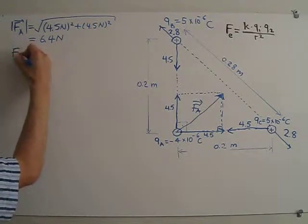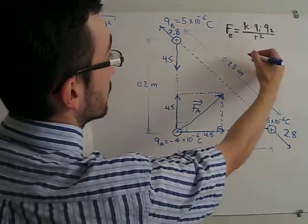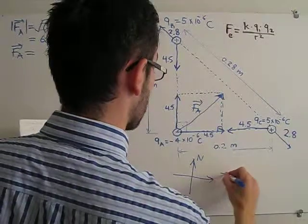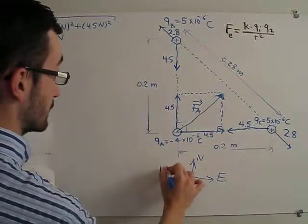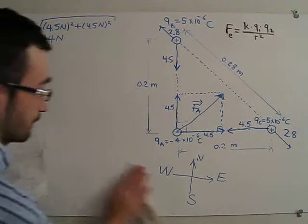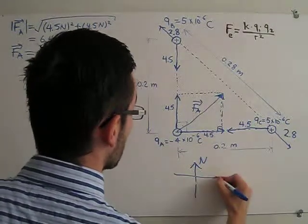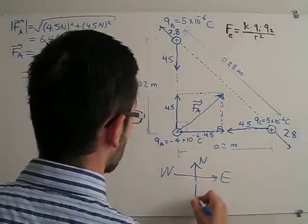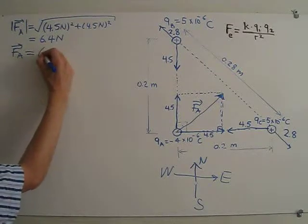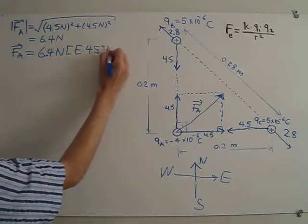Let us define north and east directions on this diagram, with west and south accordingly. Because these angles are 45 degrees, FA is given by 6.4 Newtons, east 45 degrees north.